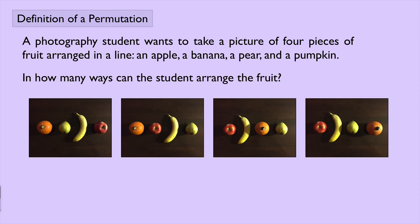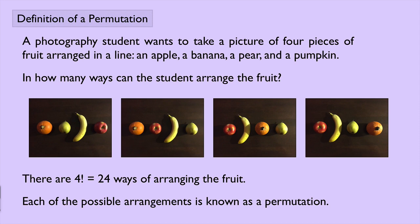You can list all these things out. And you probably remember from high school algebra that the answer is 24. There's four factorial ways of arranging the fruit. But for now, I want to look at each of these individual arrangements because each of these possible arrangements is known as a permutation. And I want to define a permutation.